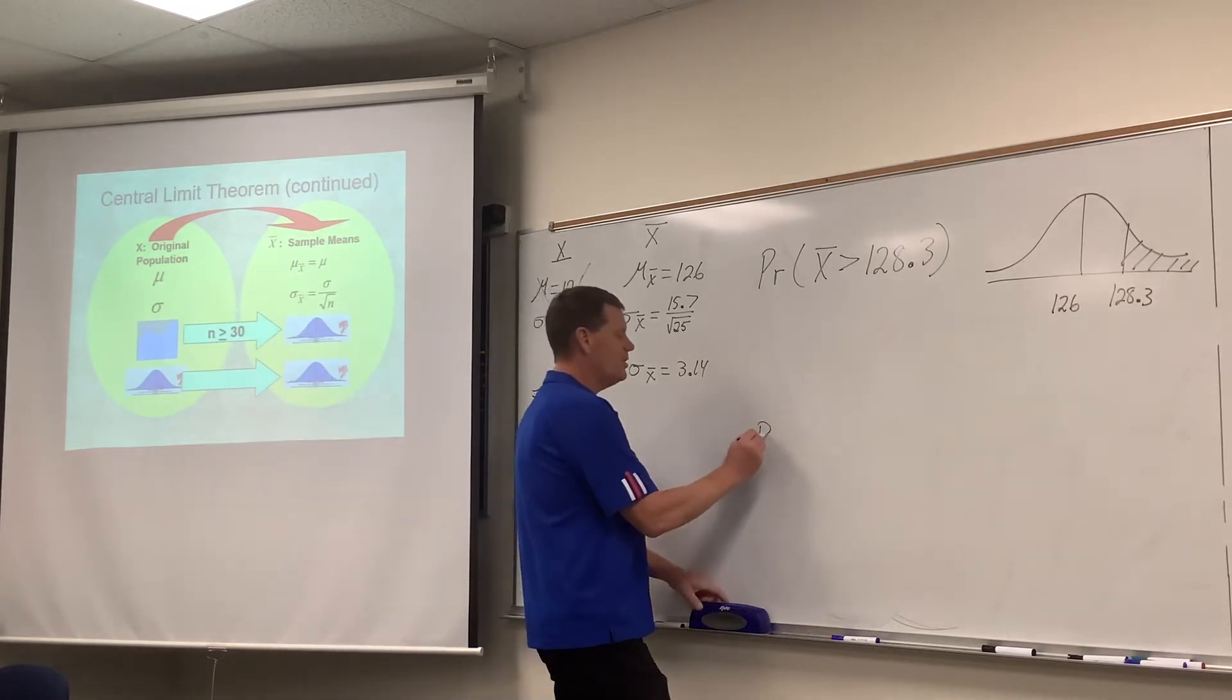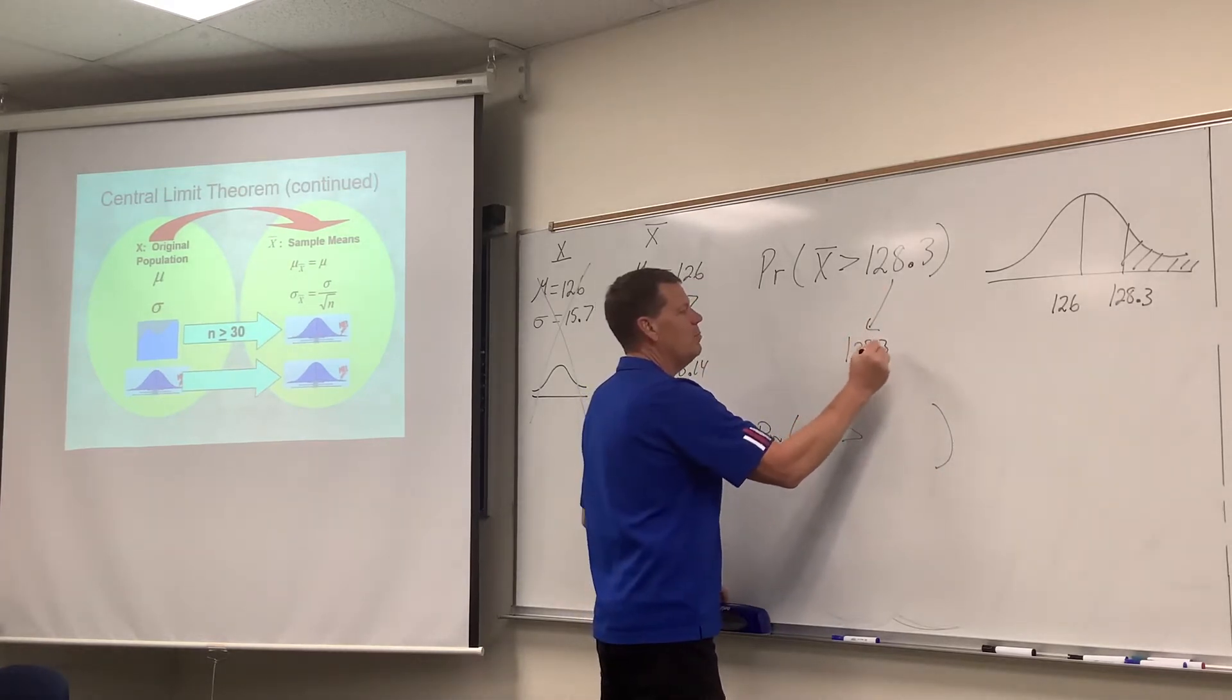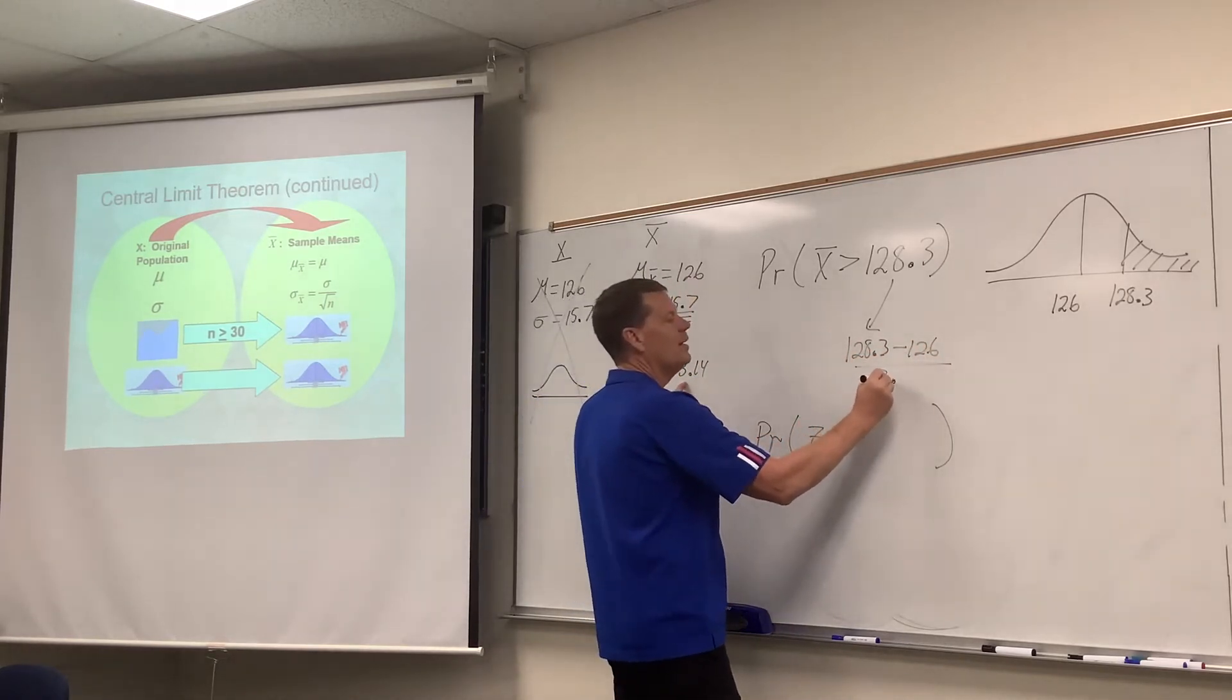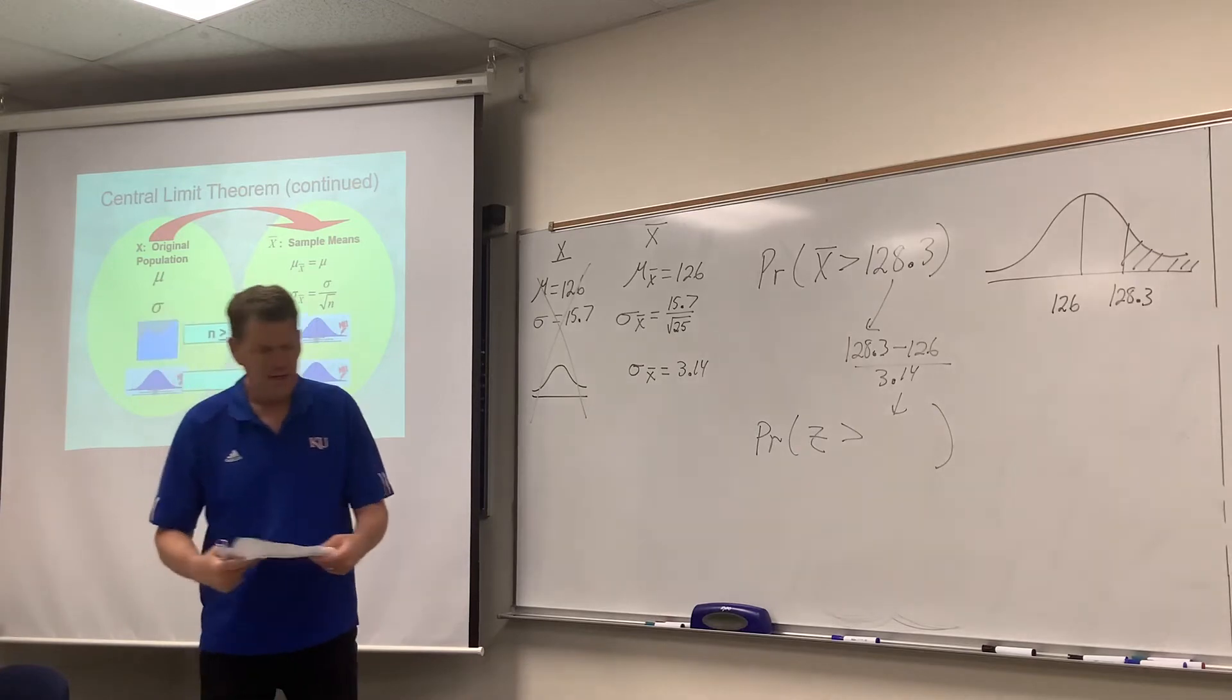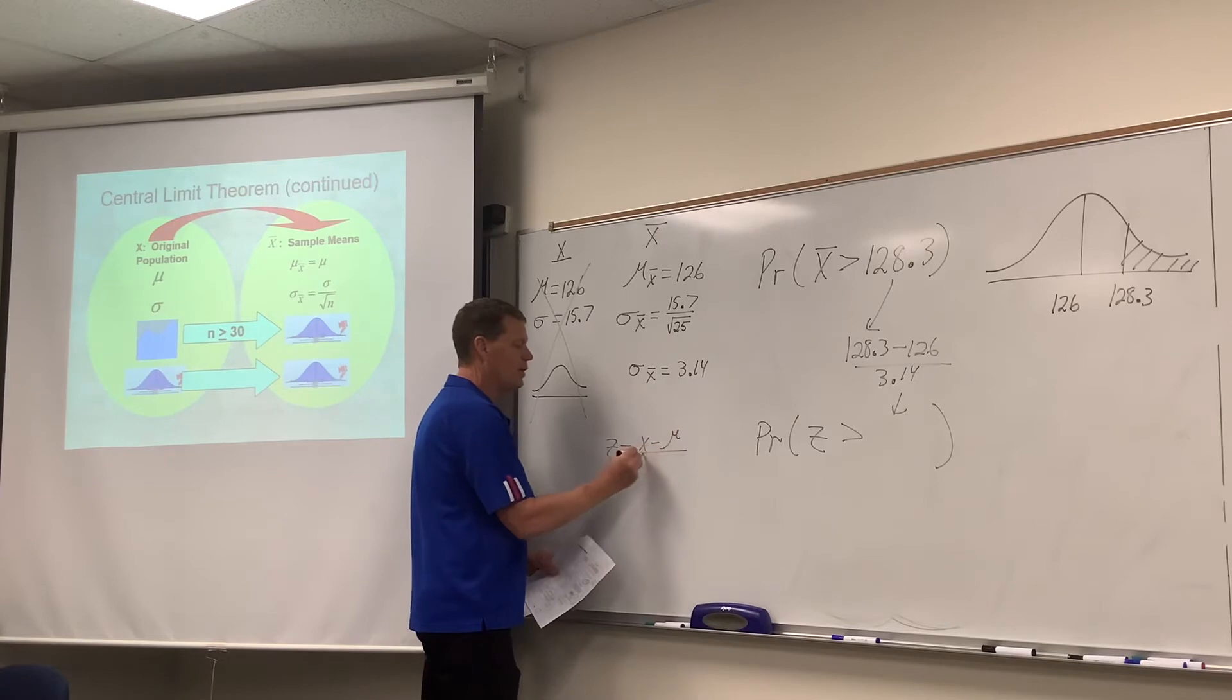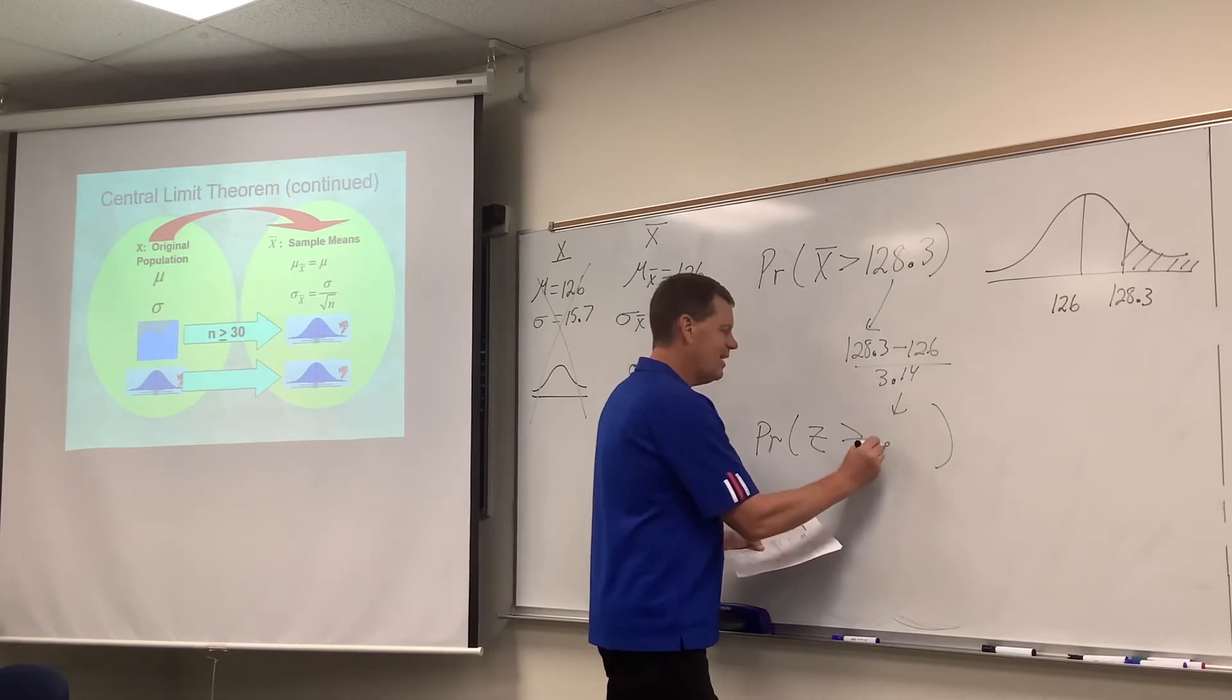And so, we'll take that 128.3 minus 126, X minus mu over sigma, right? Remember that little translator that we talked about on assignment number 17? Z equals X minus mu over sigma. And that turns out to be 0.73.